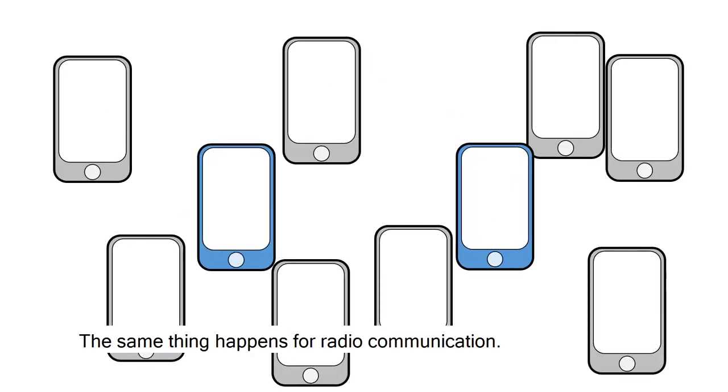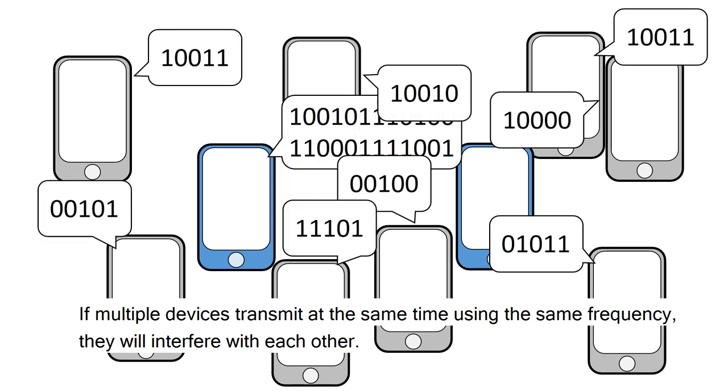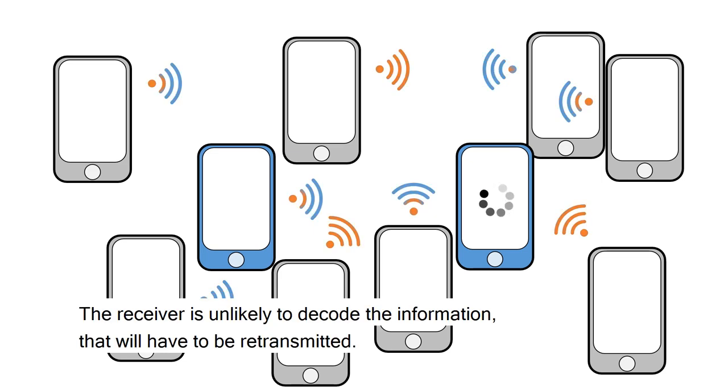The same thing happens for radio communication. If multiple devices transmit at the same time using the same frequency, they will interfere with each other. The receiver is unlikely to decode the information that will have to be retransmitted.